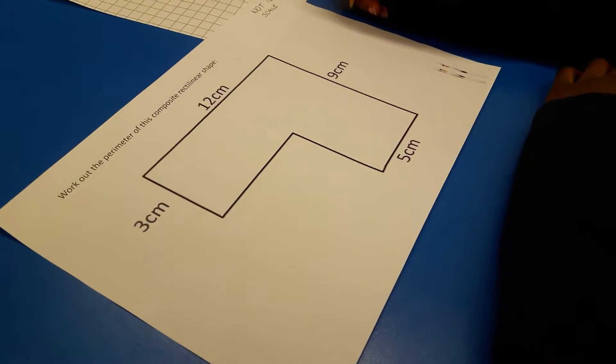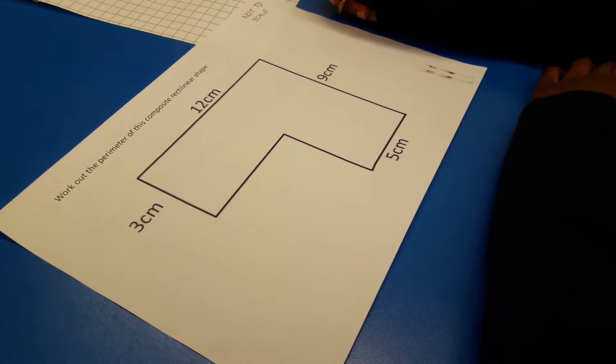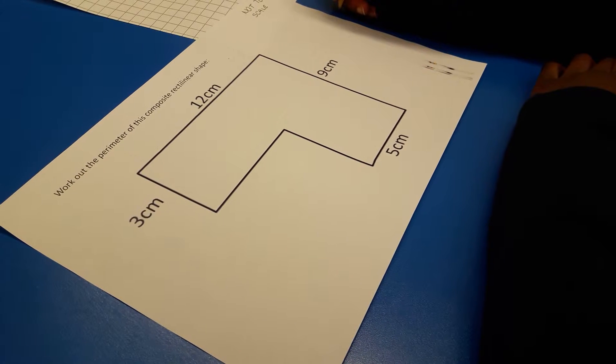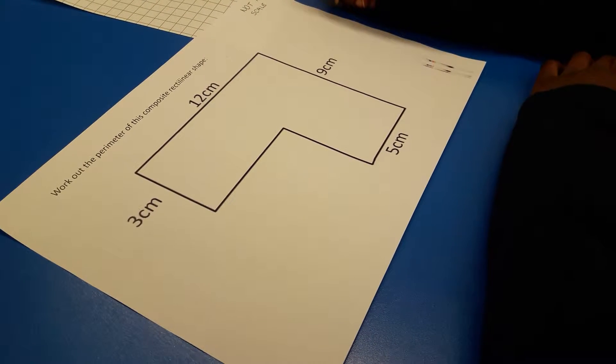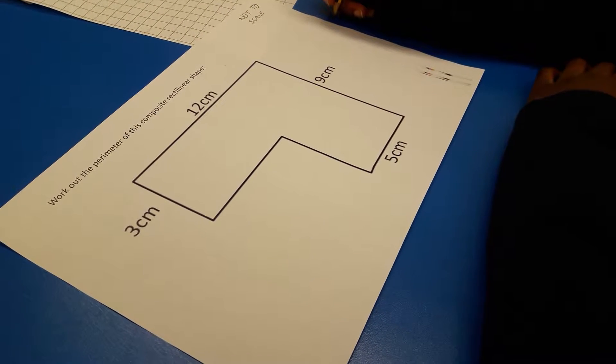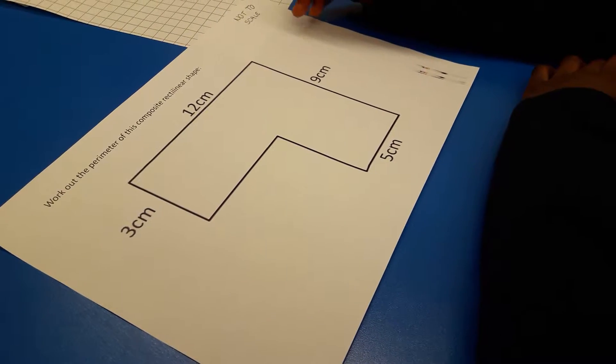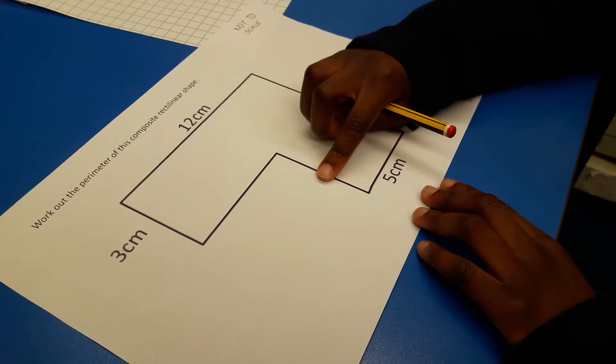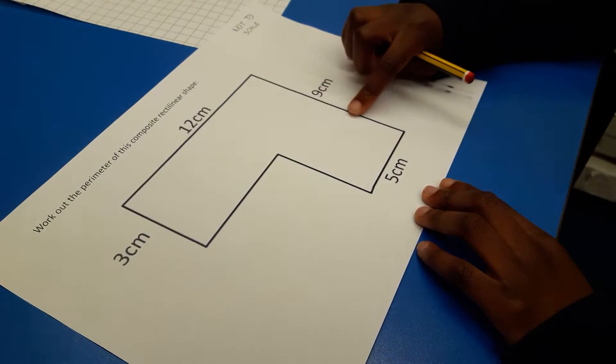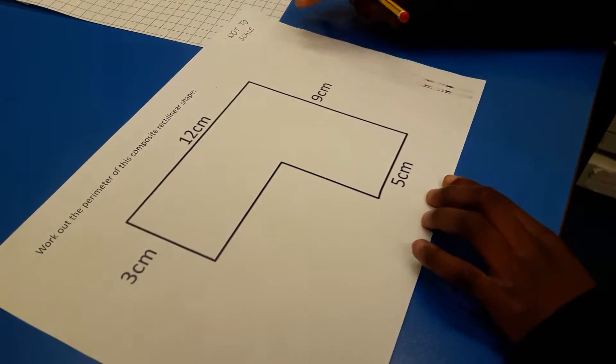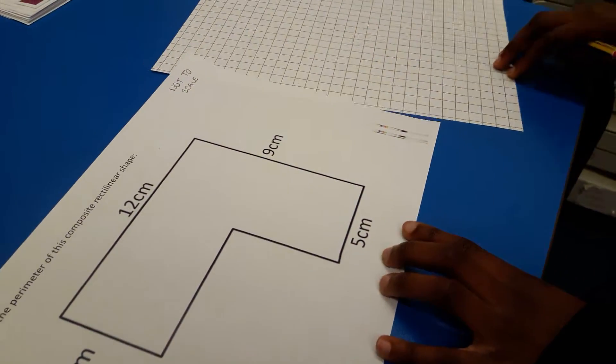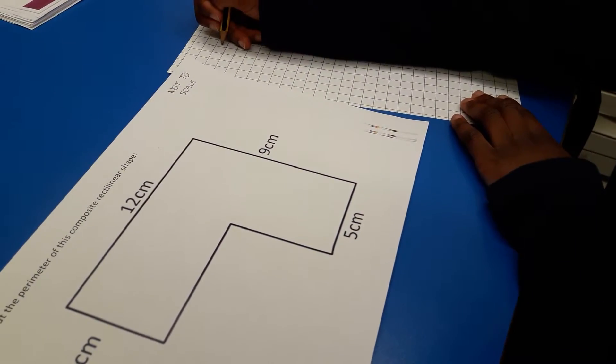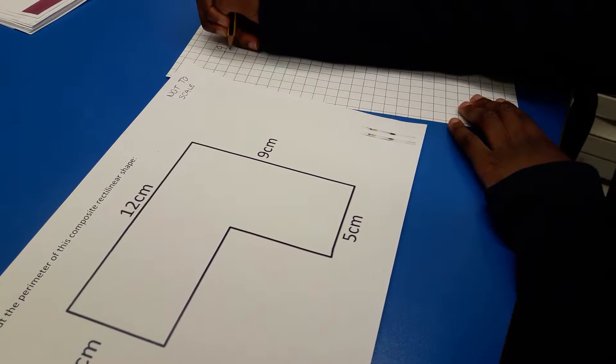How to work out the perimeter of a rectilinear shape when you cannot use the ruler because it's not to scale. First of all, to figure out this side, you'll need to take away this side from this side, so you have to do nine take away three.